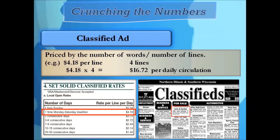For classified ads, recall they are priced by word count or number of lines. For example, in The Advocate, a Louisiana newspaper, the open rate per line on weekdays is $4.18. Looking at a tractor ad with four lines, that means the ad costs $16.72 per day.